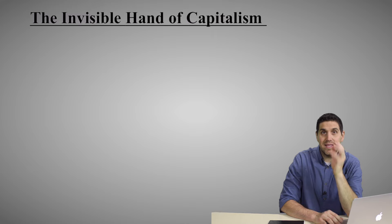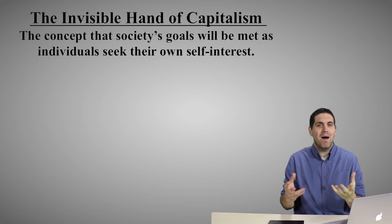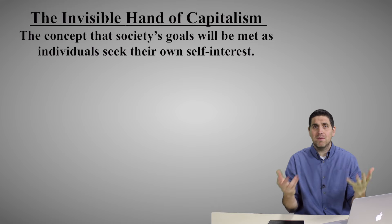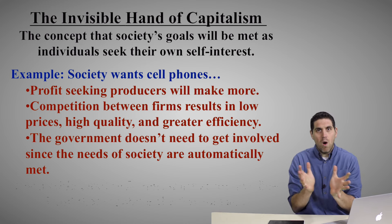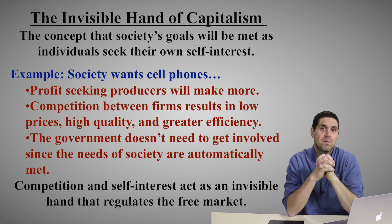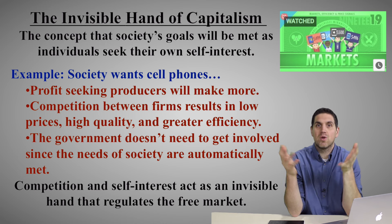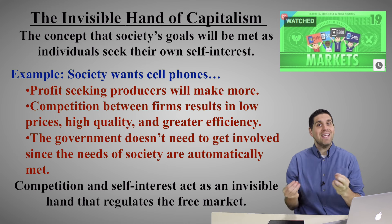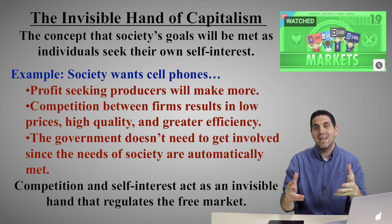The most important concept in capitalism is the idea of the invisible hand. The invisible hand is the idea that society's goals will be met as individuals seek their own goals. A business can't get rich unless they do something that you want — they've got to make awesome cars, computers, and phones, or people won't buy them. So they've got to make other people better off, and society's resources will go to the right place based on what we want produced. Competition and self-interest regulate the free market system.